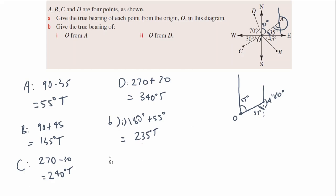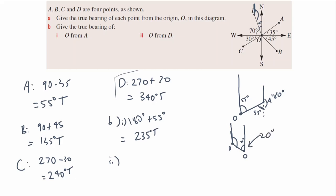Now part two: O from D. So starting at D, facing north, I'm trying to find the angle toward the origin. I'll draw that out — that's D with the north line going straight up, and O is in that direction. In the previous question we found the bearing of D from origin was 340, so that means there are 20 degrees left to 360. These are parallel north lines, which means these are co-interior angles — and co-interior angles add up to 180.